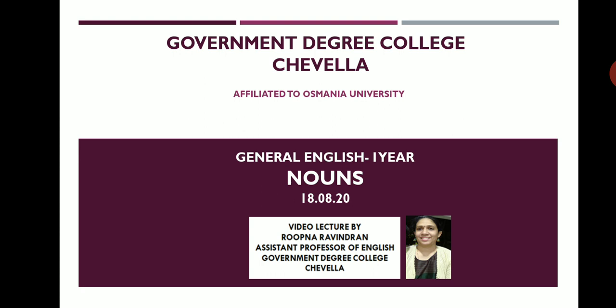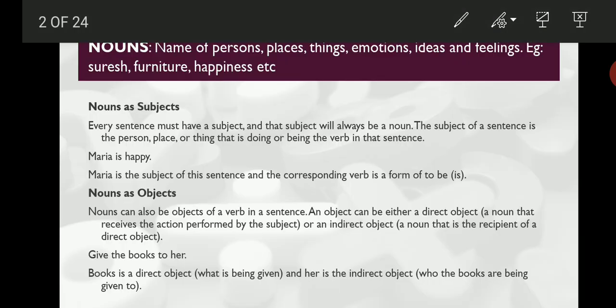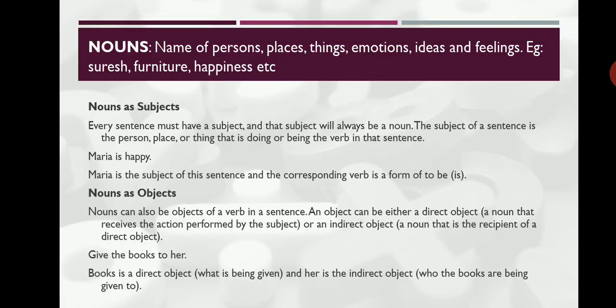Let us go to the next slide where we have the description and definition of noun. Noun is the name of persons, place, things, emotions, ideas, feelings, etc. Examples of nouns are women, Suresh, furniture, dog, happiness, love and so on.